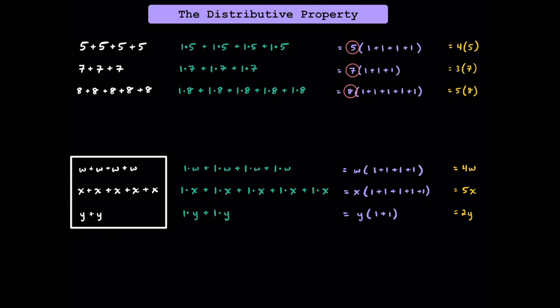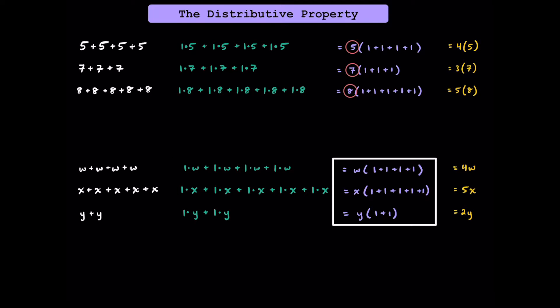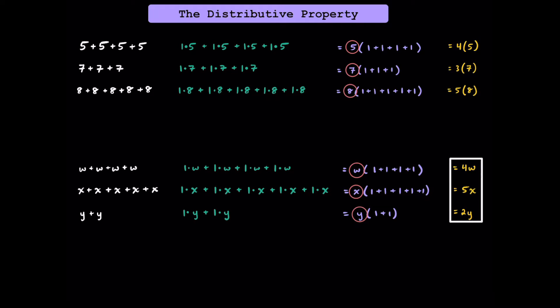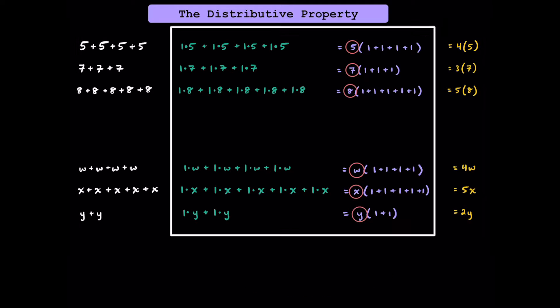Now let's extend our understanding to variable expressions. By using the identity property, we can multiply every variable by 1 without changing the value. Instead of writing the ones individually, we can add them up to see how many there are. We can see that each of the terms had a w, x, and y in common. Adding up all the ones, we can say we have four w's, five x's, and two y's. While most people understand how to get from repeated addition to multiplication, it's a bit more challenging to understand the use of the identity property and the distributive property to make it happen.